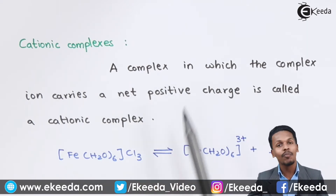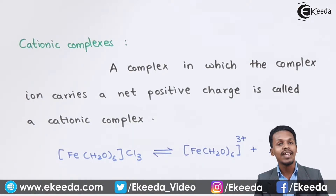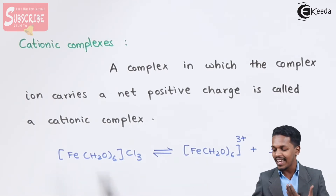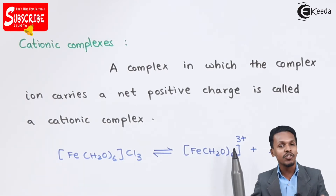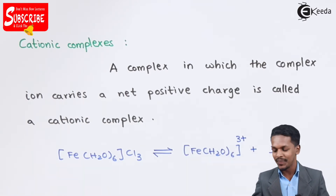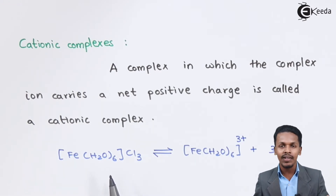Since the three Cl⁻ ions are in the primary sphere, the complex acquires a three-plus charge. This net positive charge is why this complex is called a cationic complex.